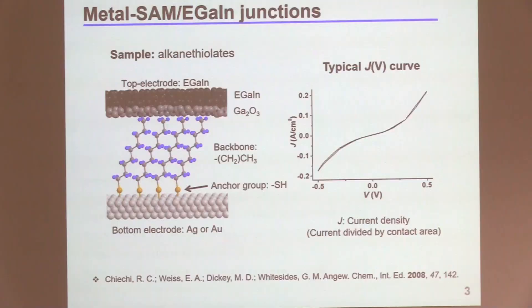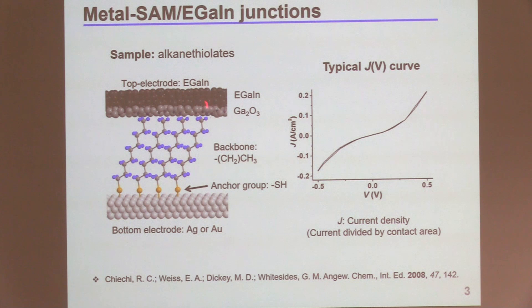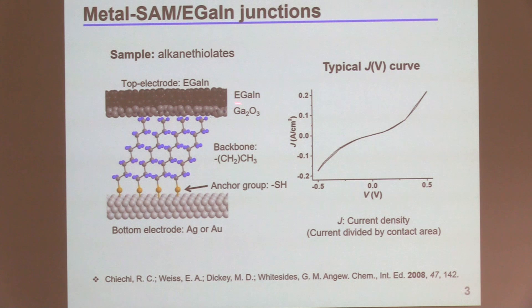Now, all about research. We work on EGaIn junctions — it's a metal sandwich with a top contact of EGaIn. EGaIn is a liquid metal with a gallium oxide outer layer. This is the simplest structure of our junctions. We have an alkyl self-assembled monolayer grown on a bottom electrode, which can be silver or gold. The anchor group is always a thiol. They have a backbone, we apply the top electrode, apply voltage, and measure the tunneling current — the typical tunneling current through the SAMs.